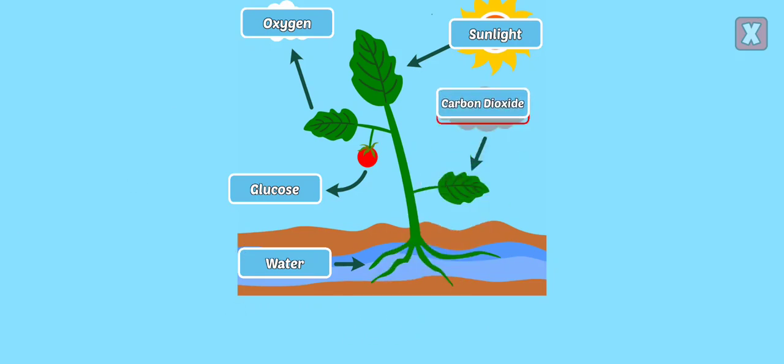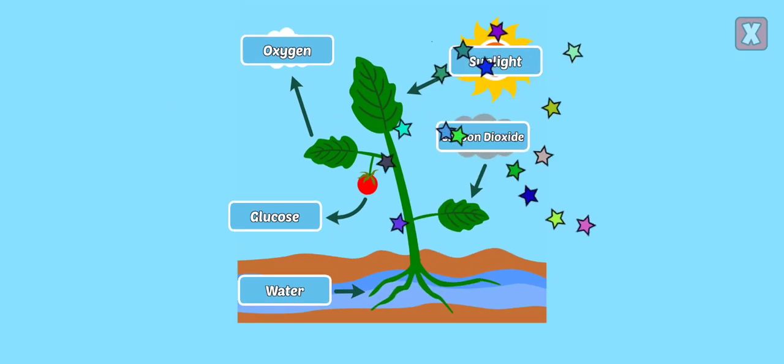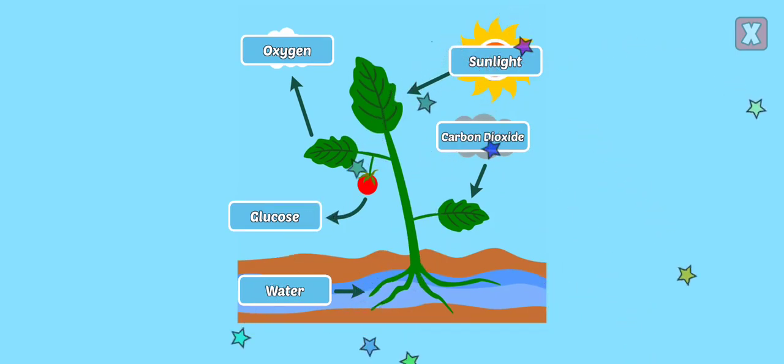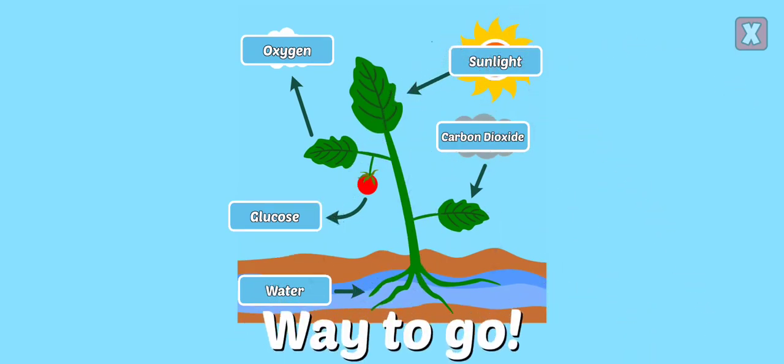Carbon dioxide. Carbon dioxide from the air passes through small holes into the leaves.